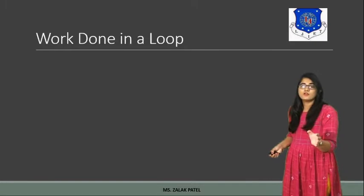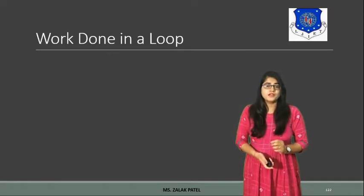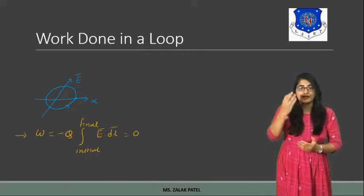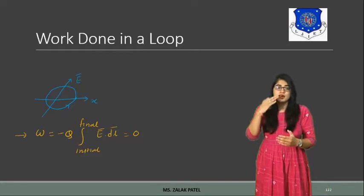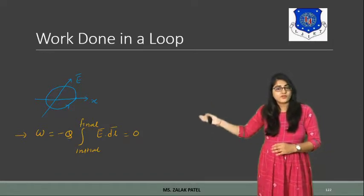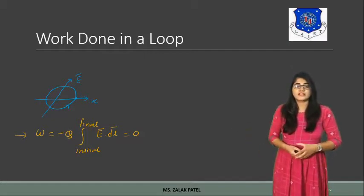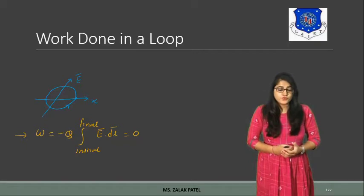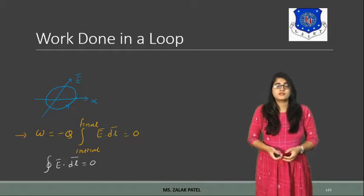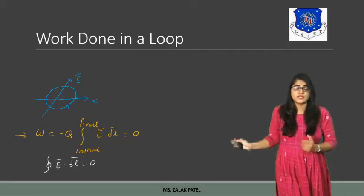Now, work done in a loop: if we start from point A and return to the same point, as shown in the figure with a circular path starting and ending at the same point, then the integral from initial to final of E·DL becomes zero, giving zero work done. Therefore, the line integral of E·DL around a closed loop equals zero.